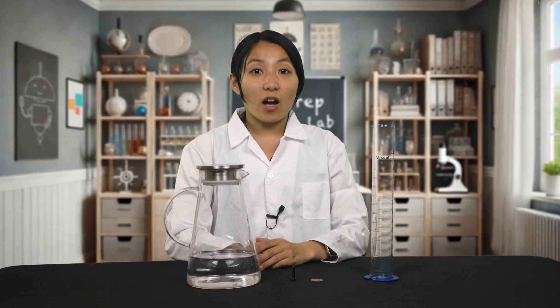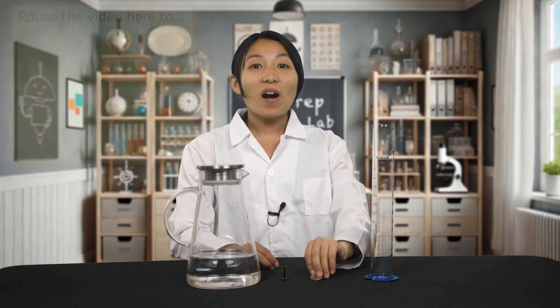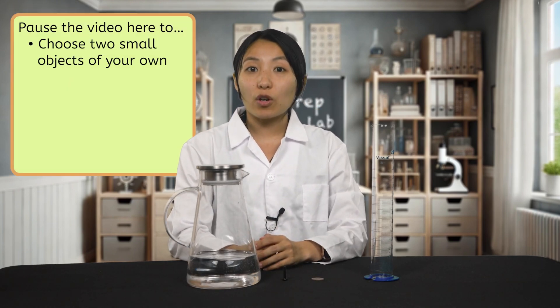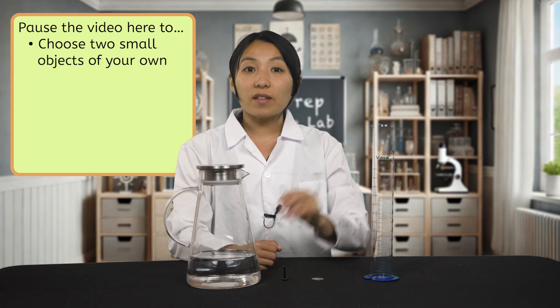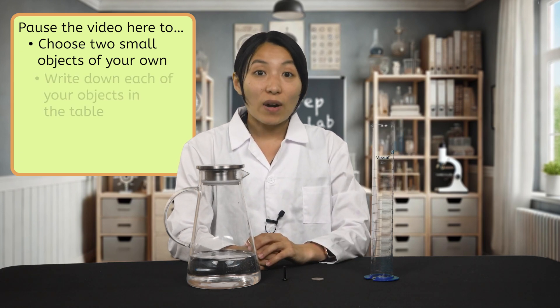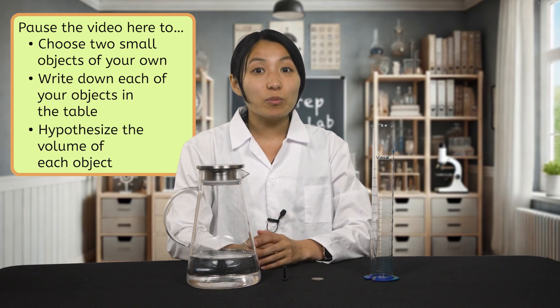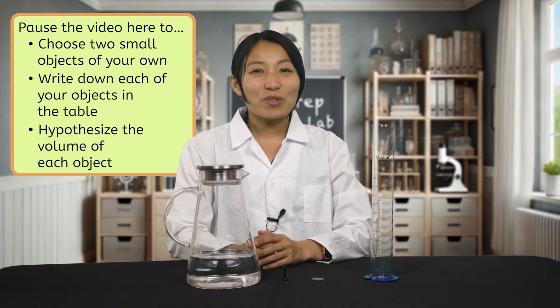My solid objects are a screw and a quarter. Pause and choose two small objects of your own. These should fit within the 50 milliliters mark on your graduated cylinder. Write down each of the objects in your table, then hypothesize the volume of each object. Record your predictions in the data table in your interactive lab notes.